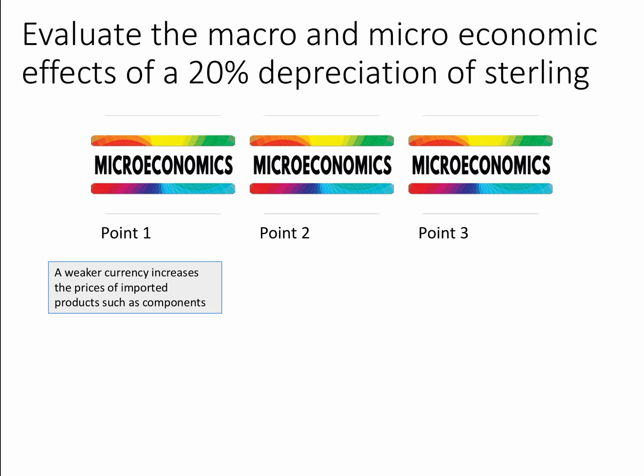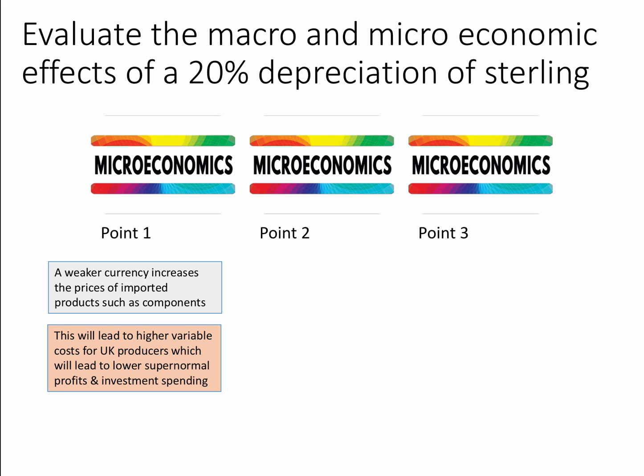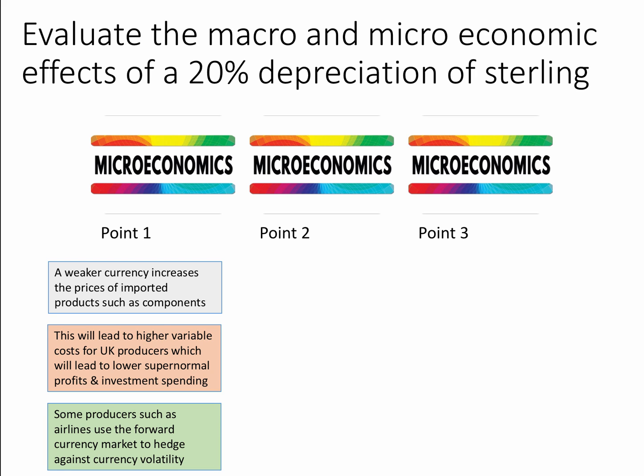Point one: the weaker currency — a fall in the pound — increases the price of imported products such as component parts, maybe those used in the car industry or in making aircraft. This will lead to higher variable costs for UK producers, which will lead to lower supernormal profits and investment spending. You could bring in an analysis diagram showing the effect of an increase in variable cost on profit-maximising price and output. However, some producers such as airlines use the forward currency market to hedge against currency volatility, so they won't necessarily be affected directly or immediately by a fall in sterling.